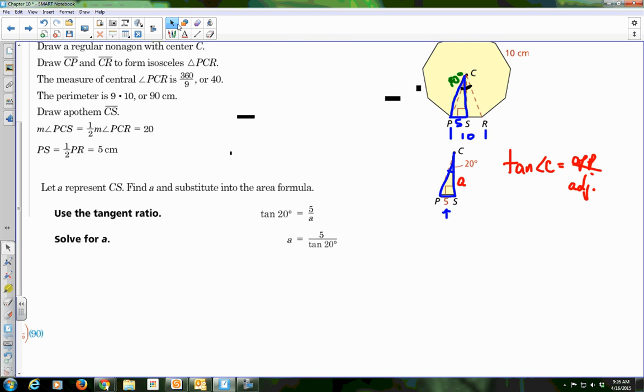When we go to solve, we're going to substitute in 20 degrees for our angle, 5 for our opposite side, and A for apothem, for our adjacent. The next thing we want to do is make sure we solve for A. If I was doing this, I would put this over 1 and then cross multiply. Then I get A times the tangent of 20 degrees equals 5, and then I would divide both sides by tangent of 20 degrees. So that's how we get this, that our apothem is equal to 5 divided by tangent of 20.